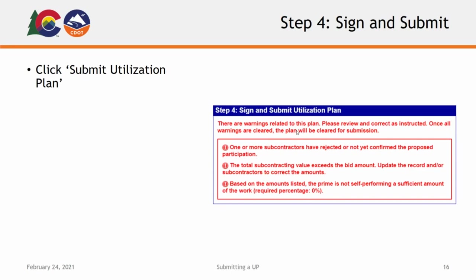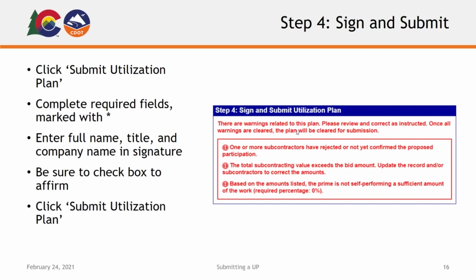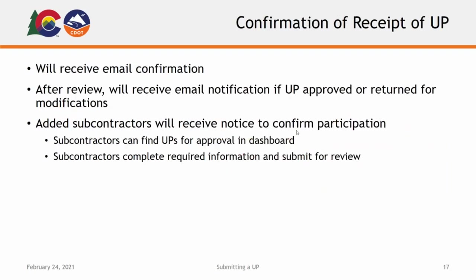Step 4 of the Utilization Plan is where you will sign and submit your utilization plan for review by CDOT. Click the Submit Utilization Plan button to open the submission form. Complete the required fields indicated by a red asterisk. For your signature, enter your full name and provide your title and company name. Also, be sure to check the box to affirm the agreement. Click the Submit Utilization Plan button one more time to submit your utilization plan for review. You will receive an email confirmation that your utilization plan has been submitted. Following review, you will receive a notification via email whether your utilization plan has been accepted or will need to be modified.